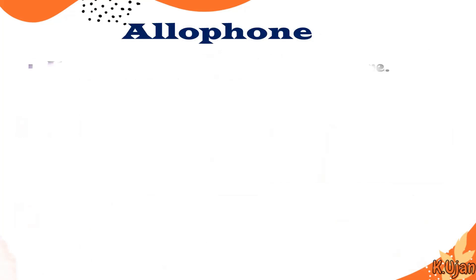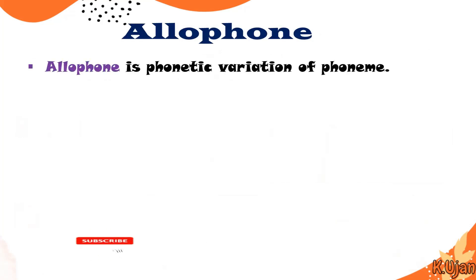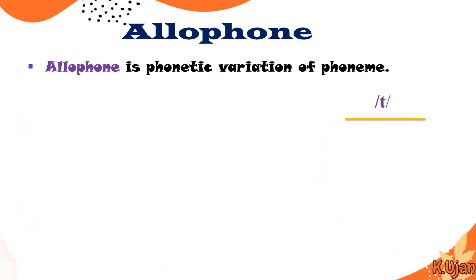What are allophones? An allophone is a phonetic variation of a phoneme. The phoneme /t/ can have two variations: in the word stop it is /t/, and in the word top it is /tʰ/. So these are actually variations of the sound /t/.